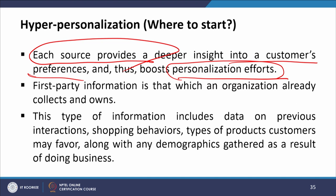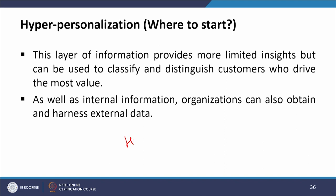First-party information is that which an organization already collects and owns. This includes data on previous interactions with the company, shopping behaviors, types of products customers may favor, along with any demographics gathered as a result of doing business — for example, address and credit card details from home delivery or credit card usage. This layer of information provides more limited insight, but can be used to classify and distinguish customers who drive the most value.